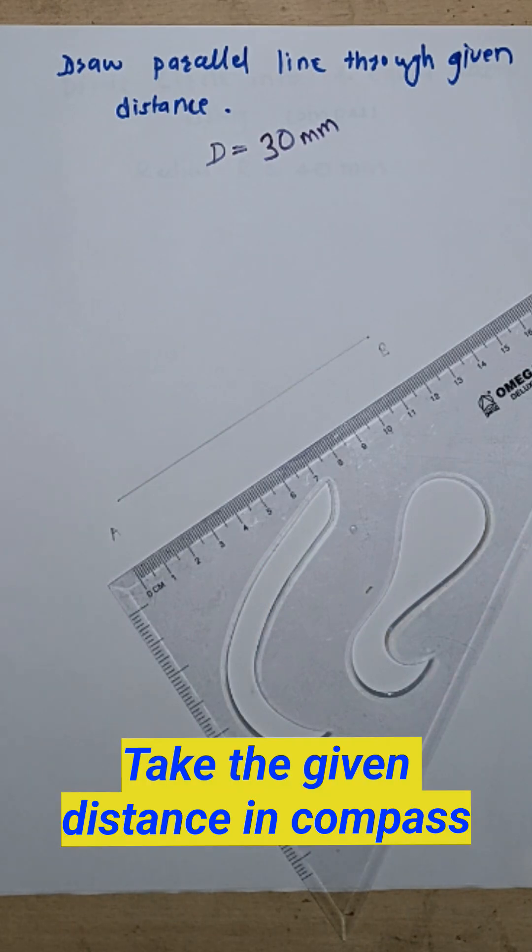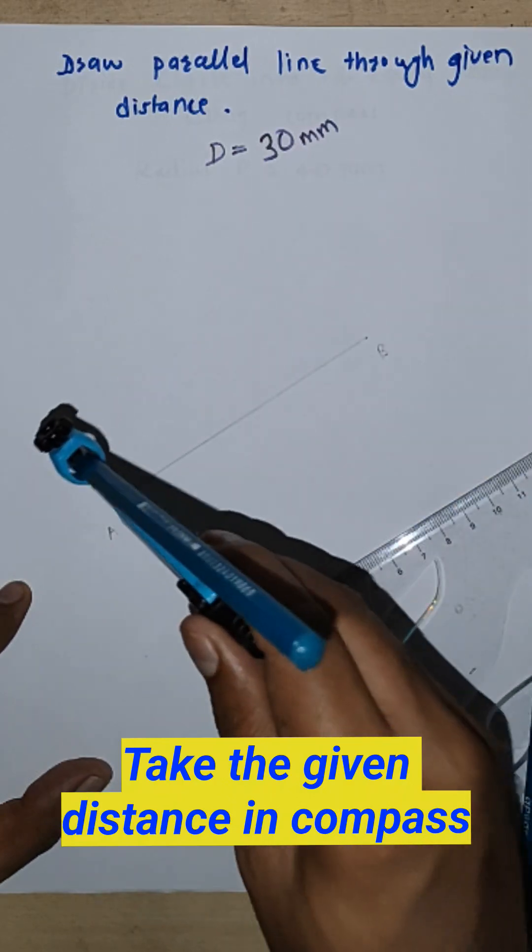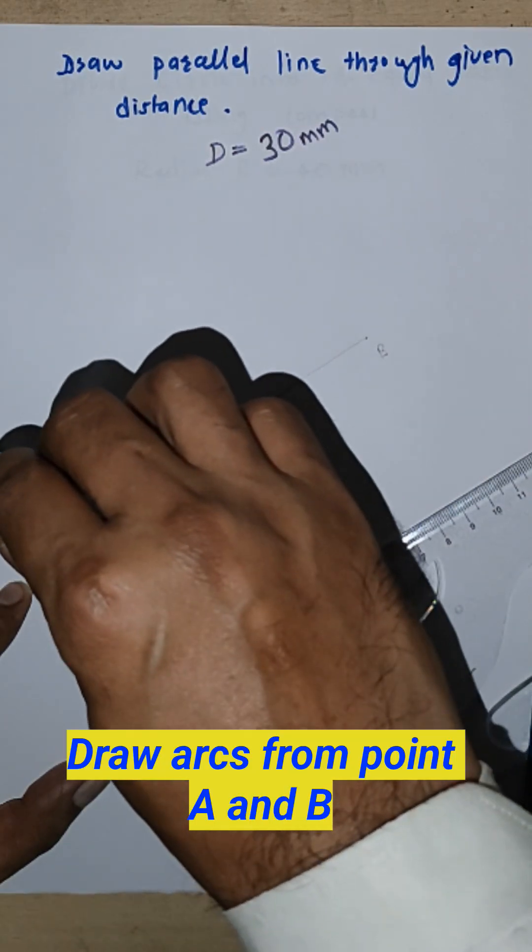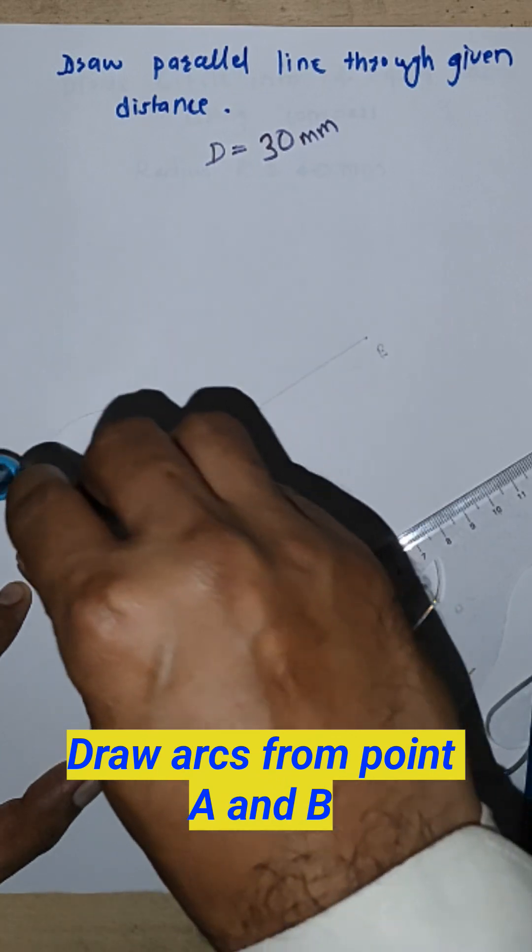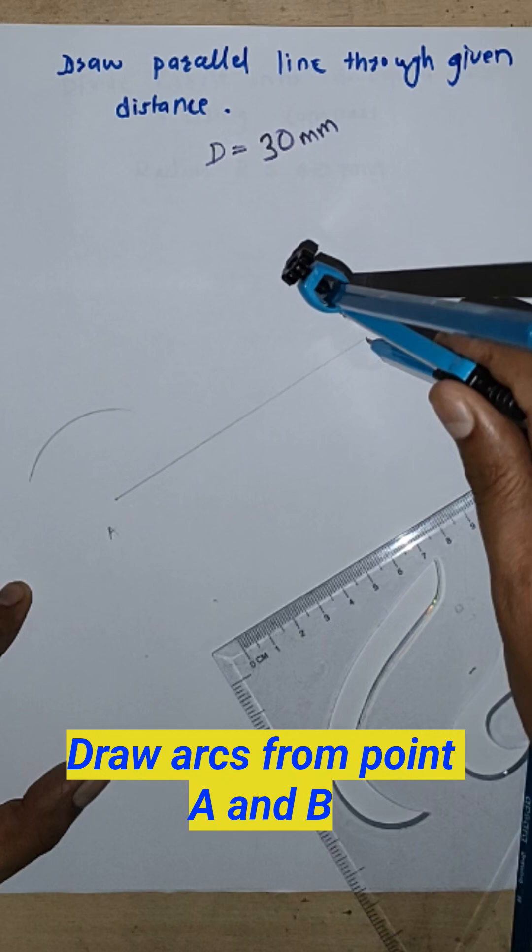Take the given distance in compass, 30 mm, and draw arcs from point A and from point B.